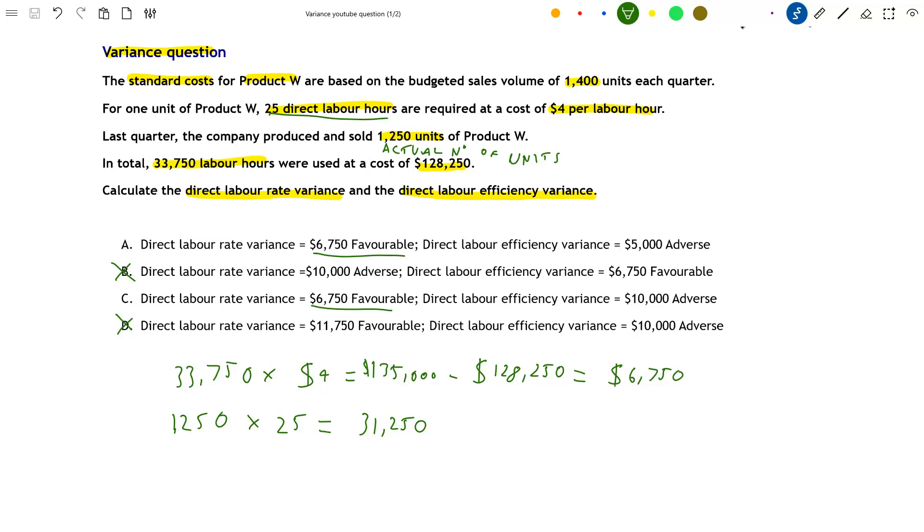It should only have taken 31,250 hours to produce 1,250 units. There is a variance here - we deduct the actual hours to find an adverse variance of 2,500 hours. To find the actual cost of this variance, we multiply 2,500 hours by the labour rate of $4 per hour, which gives us a direct labour efficiency variance of $10,000 adverse. This is in option C, which is the correct answer. The direct labour rate variance is $6,750 favourable, and the direct labour efficiency variance is $10,000 adverse.